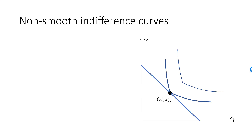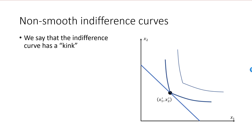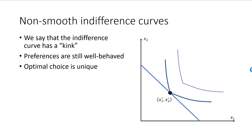Let's have a look at an example when the indifference curve is not smooth. Here is a picture demonstrating the optimal bundle when we have well-behaved but non-smooth indifference curves. In this example, the optimal indifference curve has a kink at the optimal bundle, as its slope jumps from one value to another. The indifference curve is strictly decreasing and strictly convex, so preferences are well-behaved and the optimal choice must be unique.